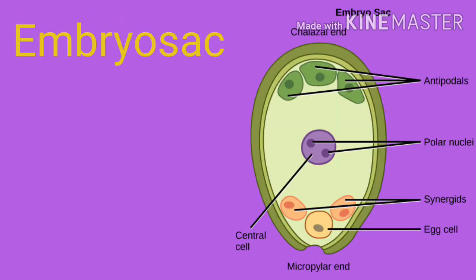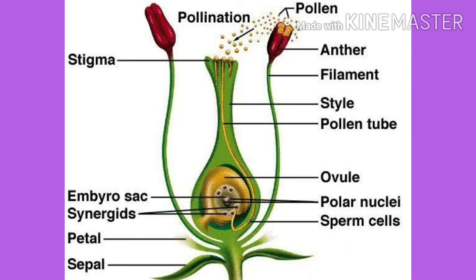The embryo sac has three components. First is the egg apparatus, containing the egg cell or female gamete and two synergids. Second is a central cell with two polar nuclei that later fuse to form a single secondary nucleus. Third is three antipodal cells.